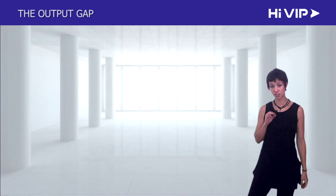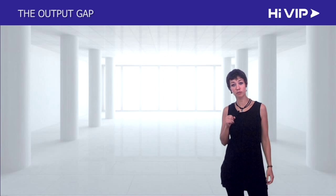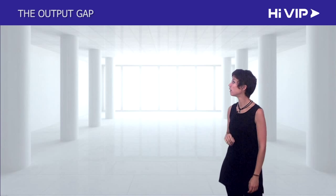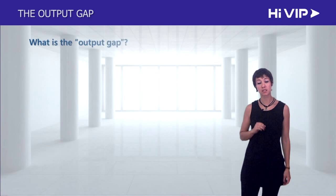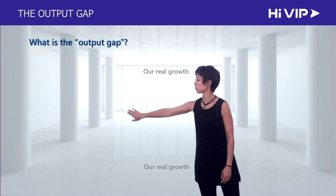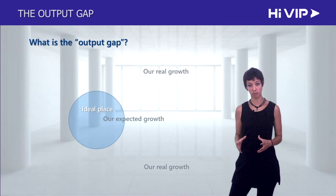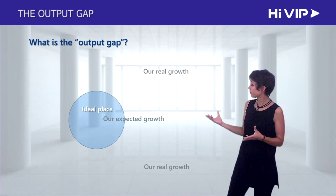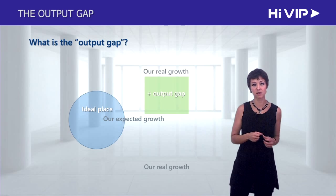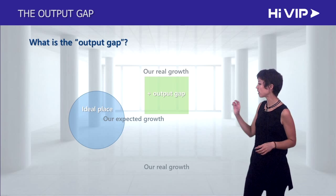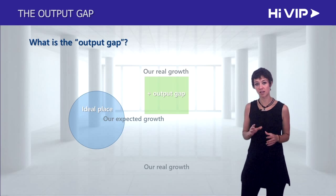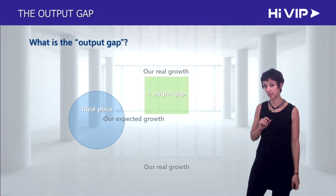Once we know what potential GDP is for the economy, we can move to a really important concept: the output gap. The output gap is the difference between how much we're growing and how much we should grow if we wanted to be at that ideal place. The output gap could be positive, meaning we're growing too fast — we're overheating. We can have a positive output gap when numbers are greater than one.